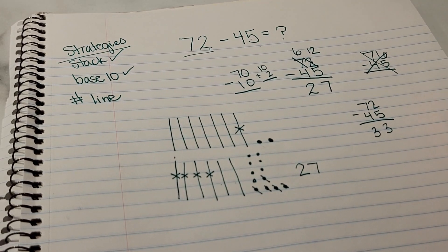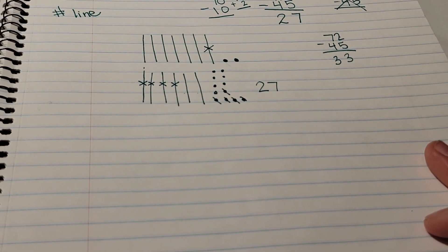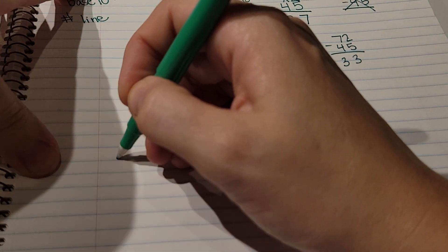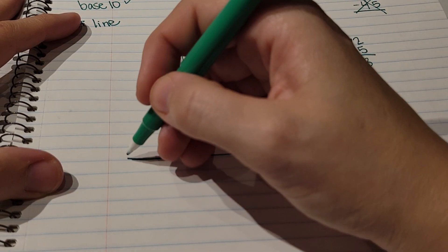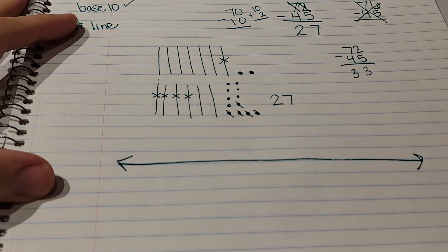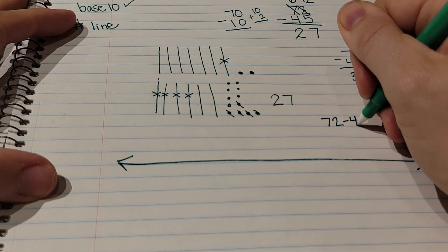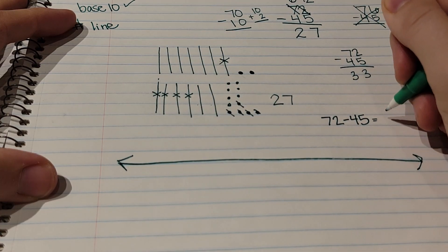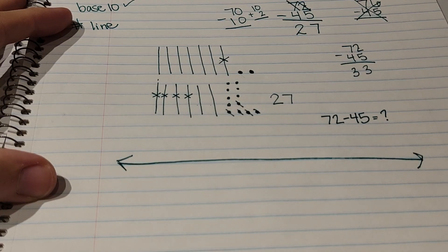So that's the base 10 strategy. And then the last strategy that we learned - we learned this one yesterday - is the number line strategy. So you're going to make a number line on your paper. Remember, this is just a segment of your number line, so it should have arrows on both sides. I'm going to rewrite the question over here so you can see it.